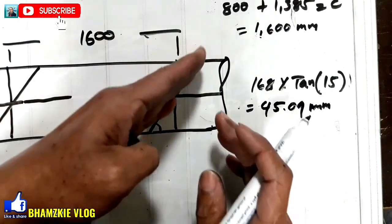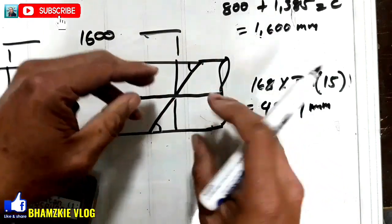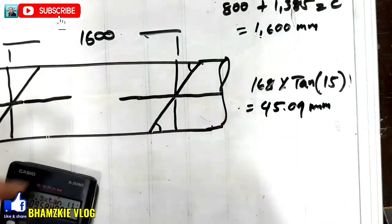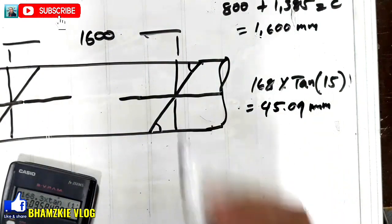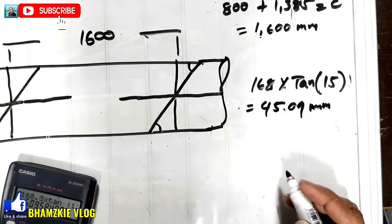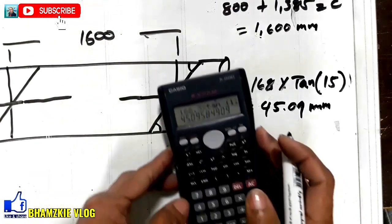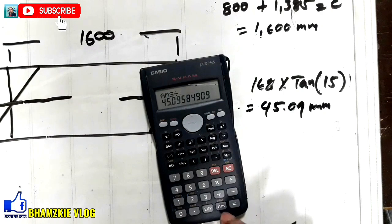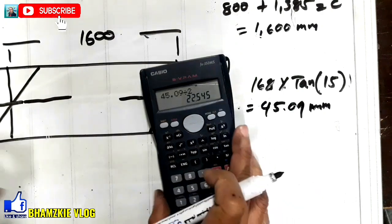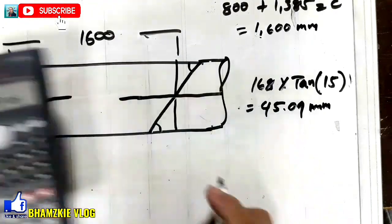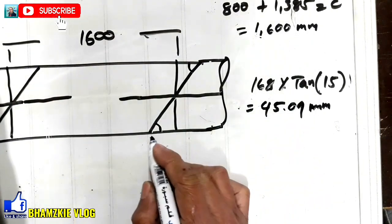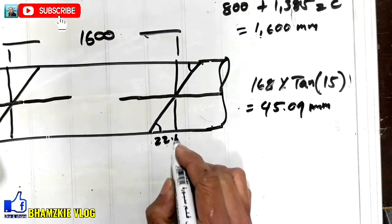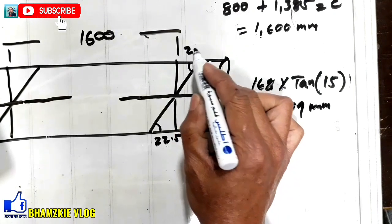Pag i-cut nyo na yan, dalawang degree kaagad yung mabubuo at pwede nyo nang ipit up kaagad at mapuporma na siya ng 30 degree. Kung i-divide natin ito, i-divide 2 natin yan. Divide 2, yung answer is magiging 22.5. Yung bawat measurement niya dito, 22.5. Dito, 22.5 din.